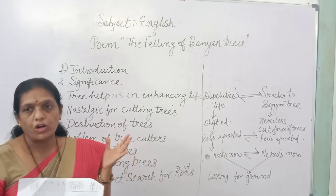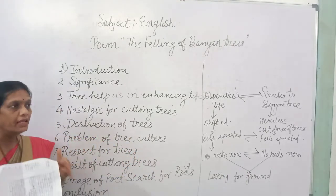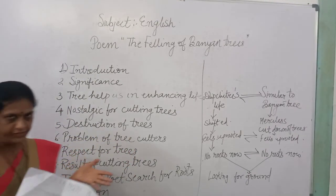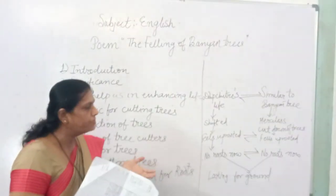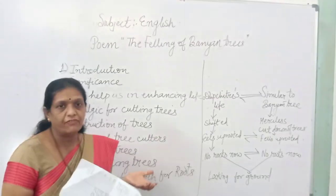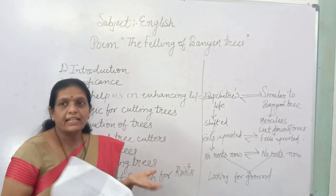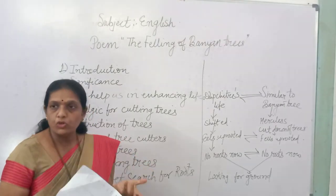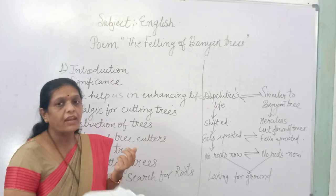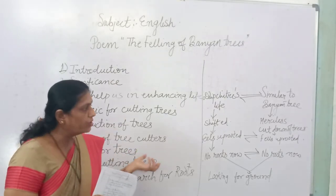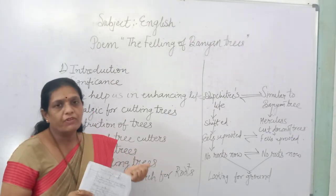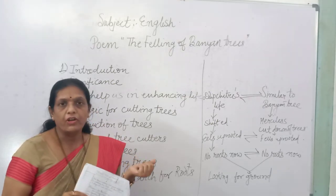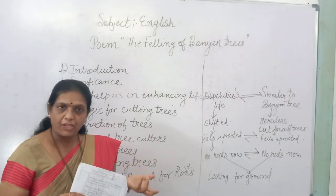We can say that this poem is an autobiographical poem where Dilip Chitre reveals about his own life — that after shifting to Mumbai he feels uprooted and wants to return to his native place, where he would lead a very peaceful life that is not possible for him in Mumbai. Thank you everybody.